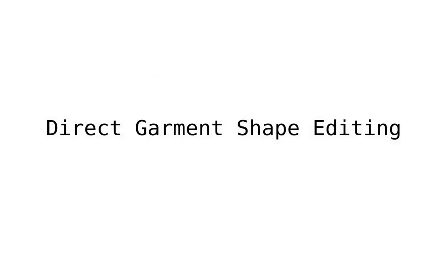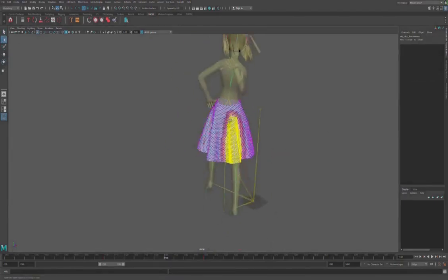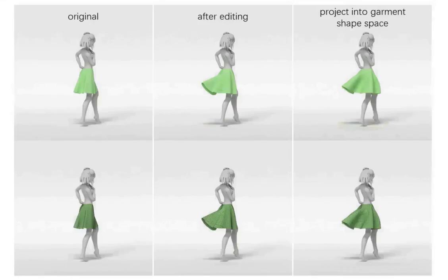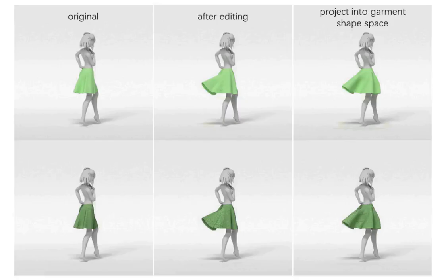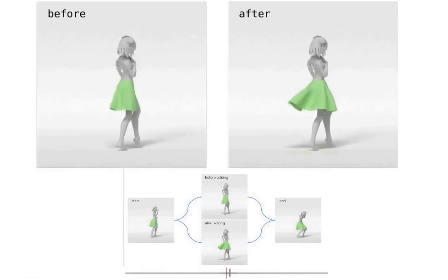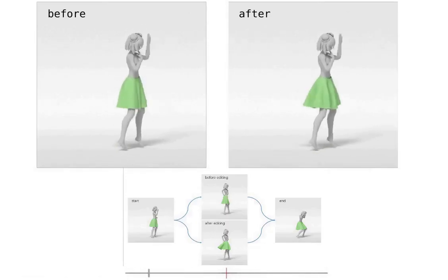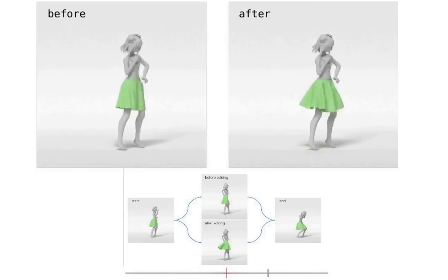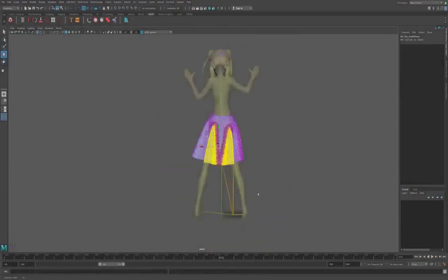Instead of selecting a candidate for a keyframe, our system also supports direct shape editing when inserting a new keyframe. Here we compare the garment shape between: the first — before editing; the second — mesh editing; and the third — projecting the edited mesh into our latent space and projecting back into 3D space using our trained network. The second row shows the mesh quality. We show the animation before and after the editing side by side. The two animations start at the same keyframe and end at the same keyframe, but the frame at the midpoint has been changed and marked as a keyframe.